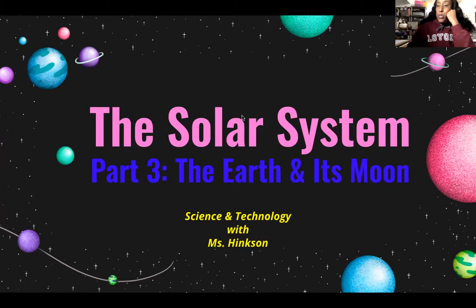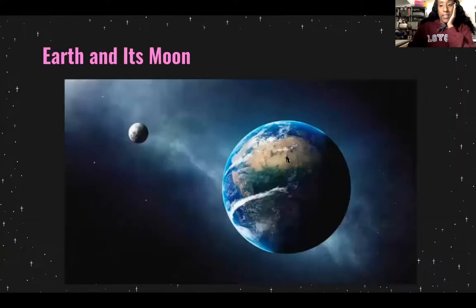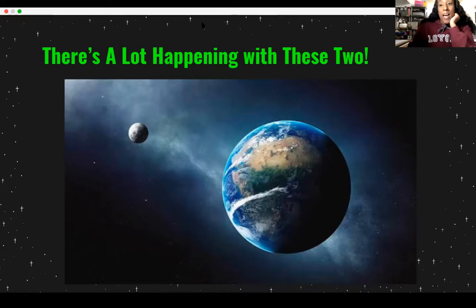So now we're going to take a closer look at the Earth and its moon. For this video, we're going to first look at the Earth, and in the next video we will look at the moon and all the stuff surrounding the moon. There's a lot happening between the Earth and the moon — a lot of the things that we experience every day is because of the Earth, the moon, and the sun, and the relationship between these three.